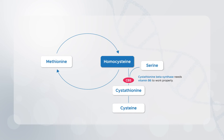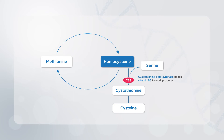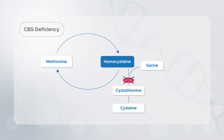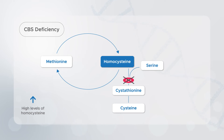The CBS enzyme is needed to convert homocysteine, along with another amino acid serine, to cystathionine, before it can then be converted to cysteine. The CBS enzyme needs the help of vitamin B6 to work correctly. When the CBS enzyme is not produced or isn't working properly, it can lead to high levels of homocysteine in your blood and urine, because homocysteine can't make cystathionine and starts to build up.